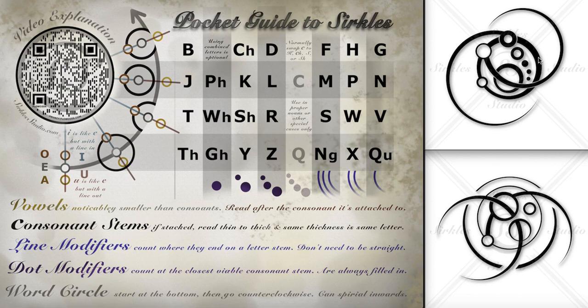And then we continue around counterclockwise until we get to this letter. It's a little circle, so it's a vowel, and it's on the word circle — and it's inside the word circle, which makes it an O.